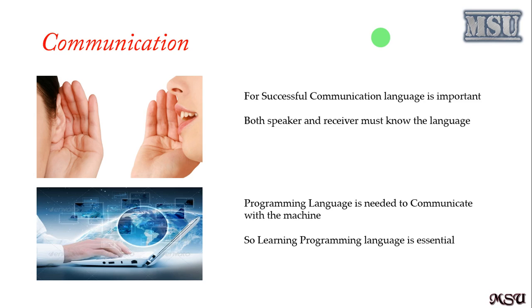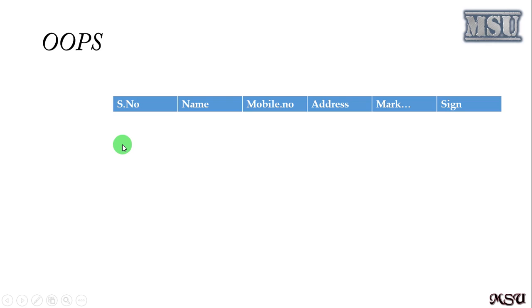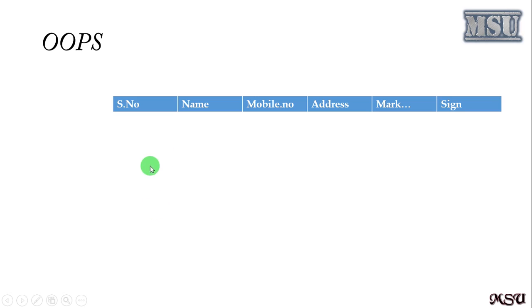We have to differentiate structure-oriented versus object-oriented. Consider a classroom: I want to collect information from students — serial number, registration number, name, mobile number, address, marks, and a signature. I create a single sheet and all students enter their data on it. What happens? The first student enters data, then the second student enters data. While the second student is writing, they can see the first student's data and can even change it. If there are 50 students, the 50th student can read and modify all the remaining 49 students' data. This is structure-oriented — there is no security; all data is visible to everyone.